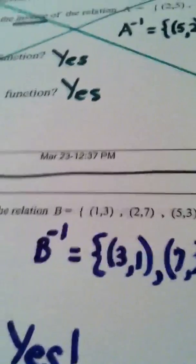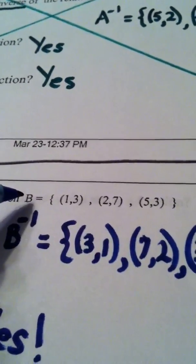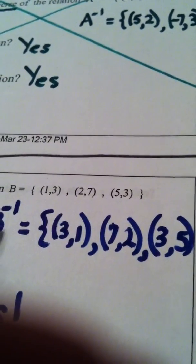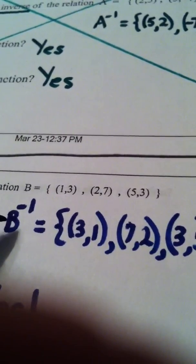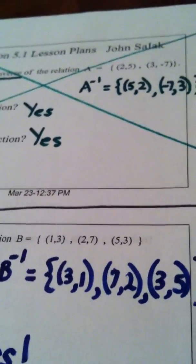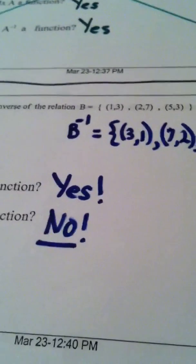So, what we have an example of here is the original relation was a function, but when I found its inverse, it was no longer a function. That brings up some interesting discussion, which we'll look at in the next video. Thank you.